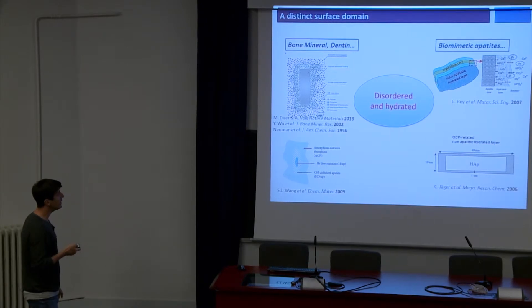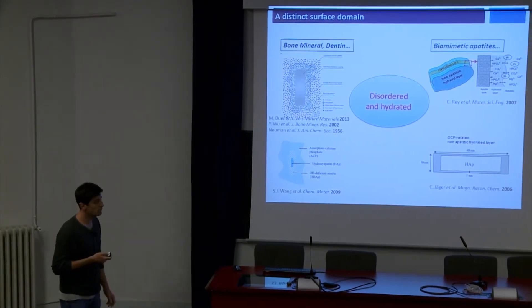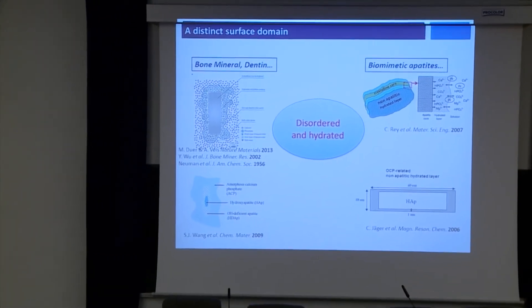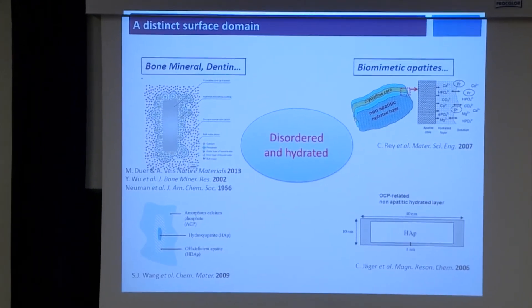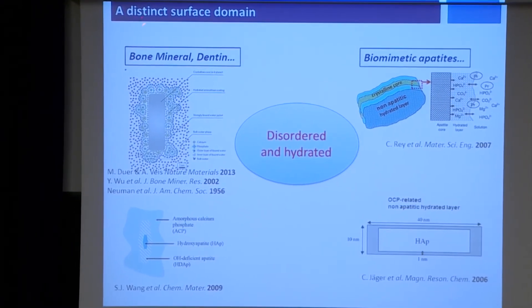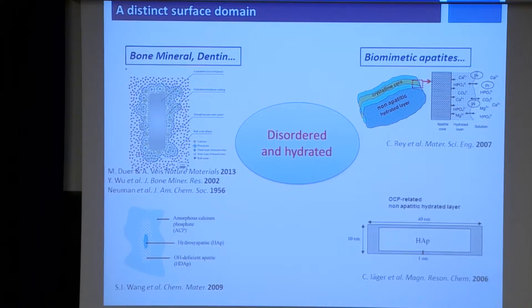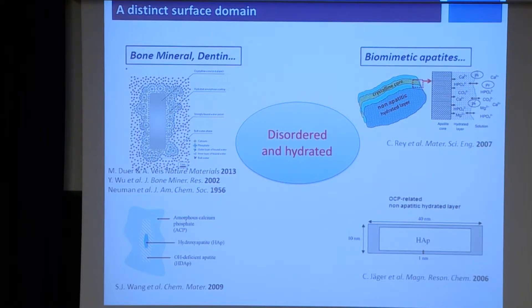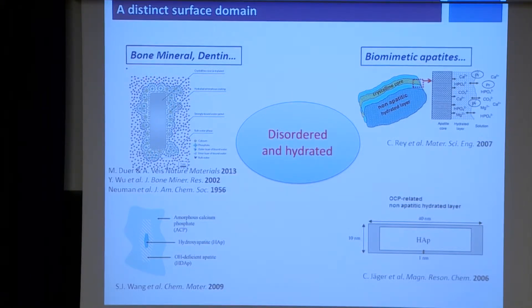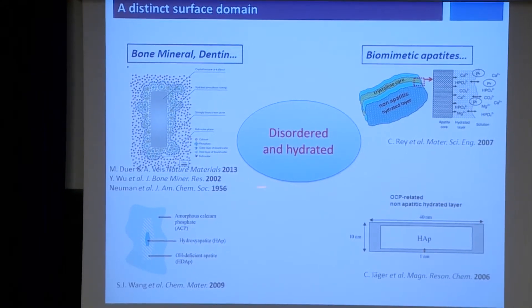Concerning that surface of the bone mineral, the surface domain is proposed to be quite distinct from the bulk. It's a quite old concept — the first paper was in the late fifties. There are now recent experiments and recent papers dealing with both biological apatite and biomimetic apatite. The data are rather sparse, but the common feature that emerges is that the surface domain would be very disordered, highly disordered, and highly hydrated.